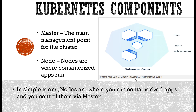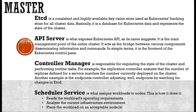Let's look at Kubernetes components. As with any cluster, there is a concept of master and nodes — and the Kubernetes cluster also has a master and one or multiple nodes. The master is the main management point for the cluster. The node is where containerized applications are running. In simple terms, nodes are where you run your containerized applications, and you control them from the master. The master itself has some important components we should know.